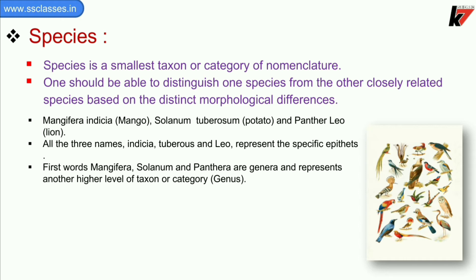We can see that Mangifera indica is mango, Solanum tuberosum is potato, and Panthera leo is lion. Indica, tuberosum, and leo are specific epithets. The first words — Mangifera, Solanum, and Panthera — are the genus names. Mangifera, Solanum, and Panthera refer to the higher taxon called genus. The genus Panthera includes species like leo and tigris.